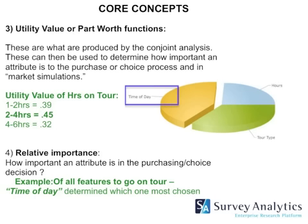The third core concept is the utility value or part worth functions — what you receive back after you run and deploy the conjoint analysis. These can be used to determine how important an attribute is to the purchase or choice process. For example, with our Seattle tour, looking at the utility values of hours on a tour across three levels, two to four hours is clearly the most popular. The fourth concept is relative importance: on the pie chart you can see that time of day determined which tour was most chosen, compared to hours or tour type.